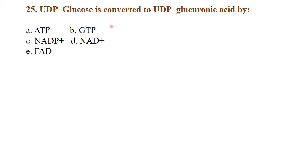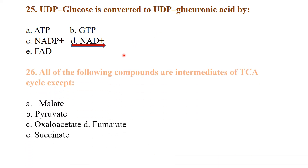UDP-glucose is converted to UDP-glucuronic acid by NAD+. All of the following compounds are intermediates of the TCA cycle except pyruvate — pyruvate is not an intermediate of the TCA cycle; it is a starting material that is converted to acetyl coenzyme A before entry into the cycle.